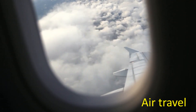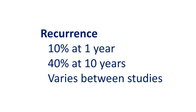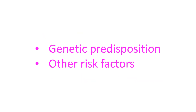Simple preventive methods have also been discussed earlier. Some studies have placed the chance of recurrence at around 10% at one year and 40% at ten years, though this figure is variable among different studies. Still, there is no doubt that there is a definite risk of recurrence unless you are meticulous about preventive measures. The chance of recurrence is higher in those who had clots without being bedridden or other reversible factors.